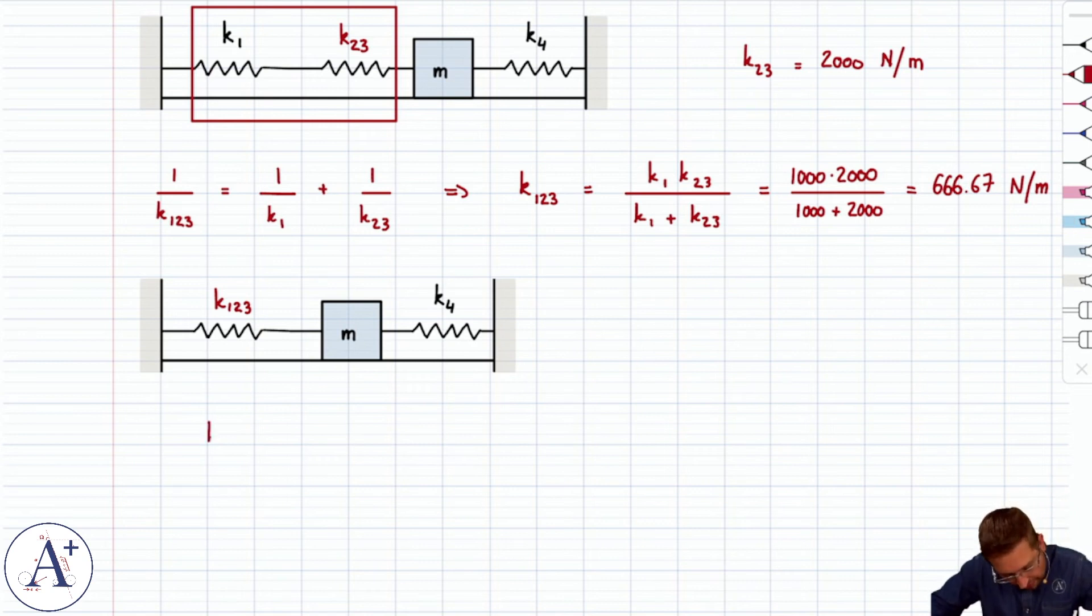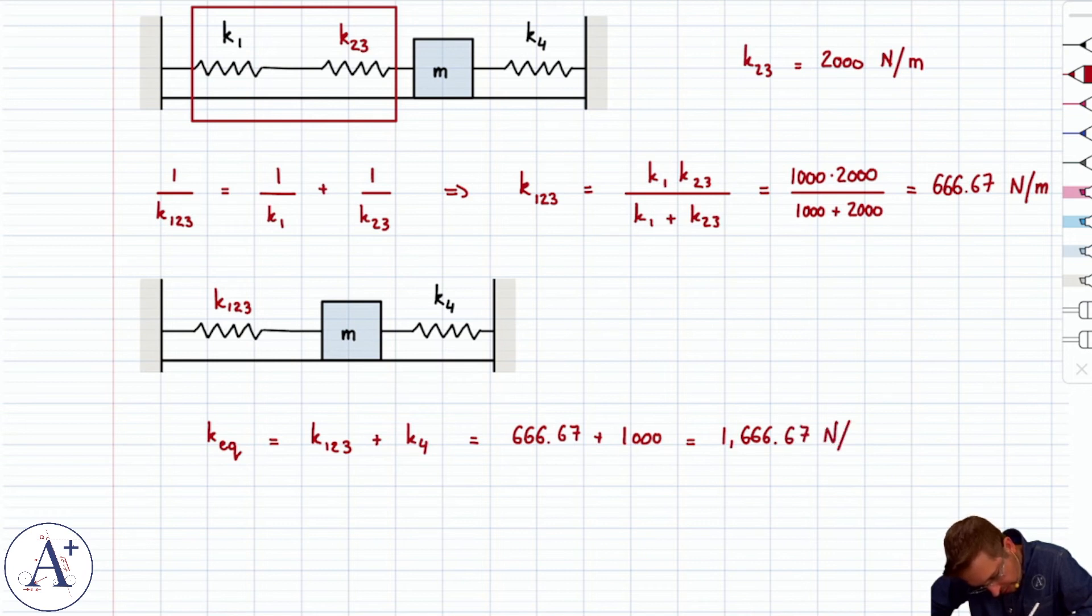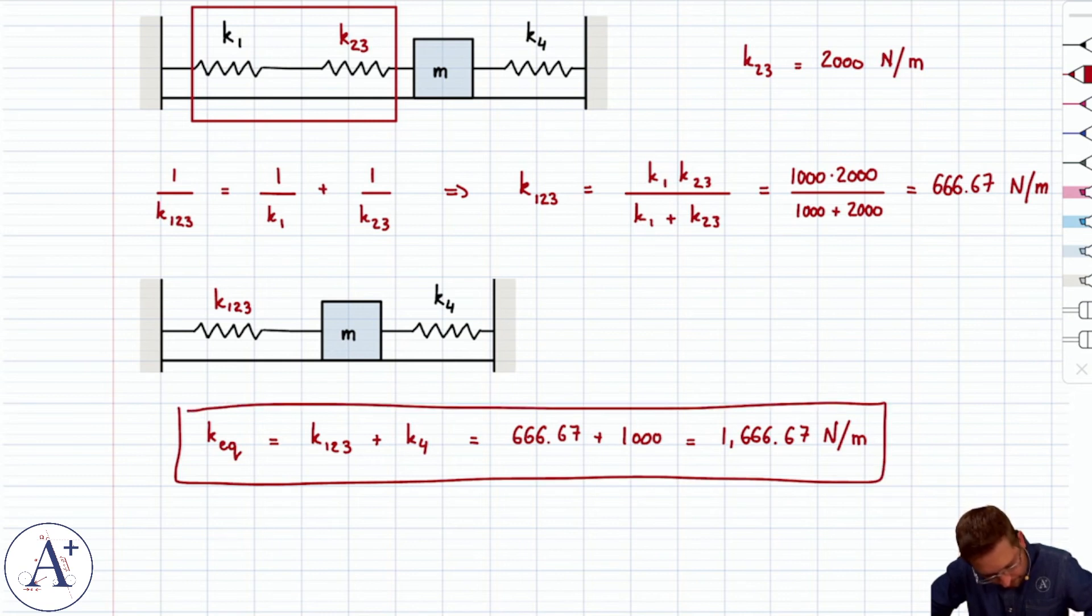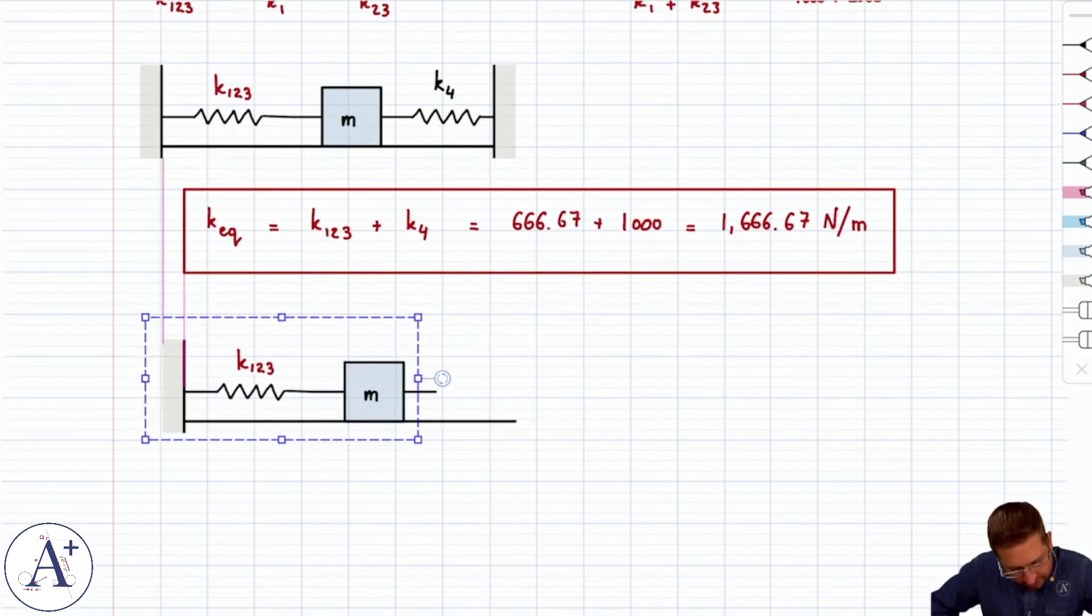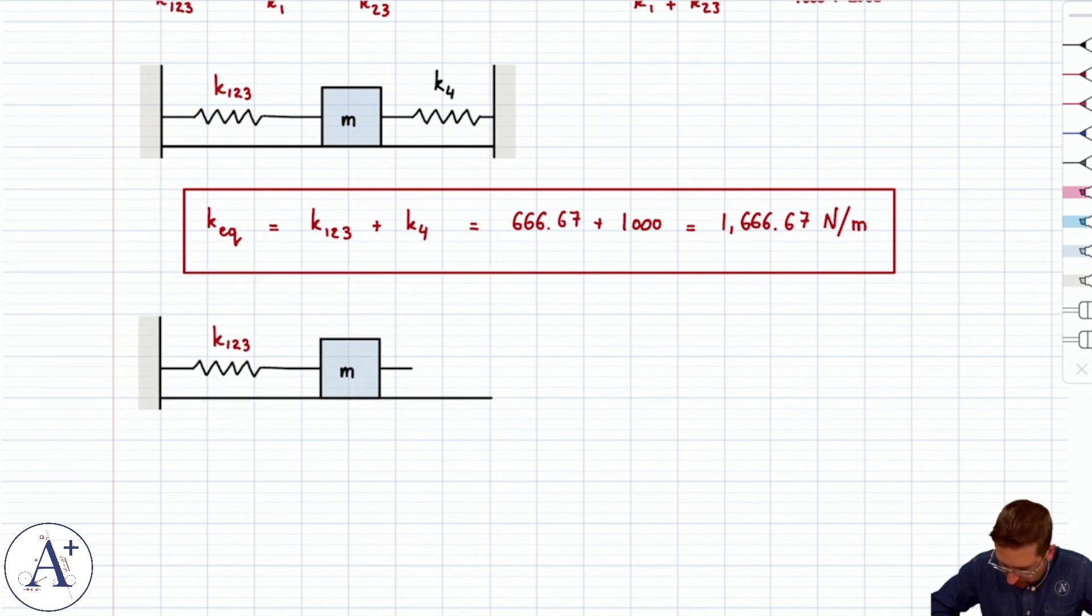And so because of it, I can conclude that k equivalent is just the sum k1,2,3 plus k4, because that's how I add spring constants if the springs are arranged in parallel. And so that gives me 666.67 plus 1,000, which is of course 1,666.67 newtons per meter. And so that's the end of that. We've reduced our arrangement of one mass and four springs to a single mass with an equivalent spring that has a spring constant k equivalent that is equal to 1,666.67 newtons per meter.